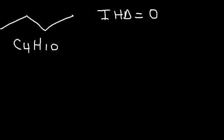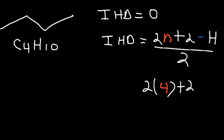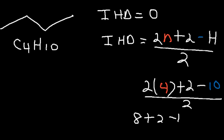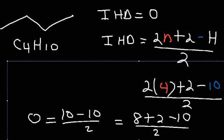Butane has the formula C4H10. To calculate the IHD, or the degrees of unsaturation, it's equal to (2n + 2 minus the number of hydrogen atoms) divided by 2. N represents the number of carbon atoms. So we have 4 carbon atoms, therefore n is equal to 4, and we have a total of 10 hydrogen atoms. 2 times 4 is 8, and 8 plus 2 is 10. 10 minus 10 is equal to 0, so butane has an IHD value of 0.